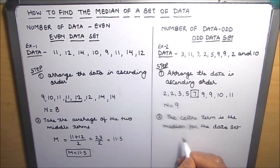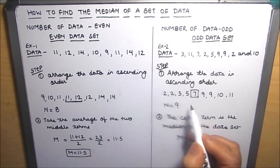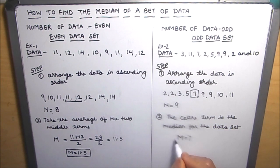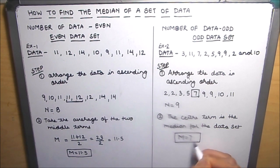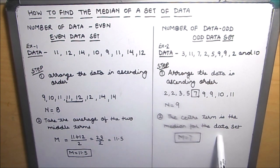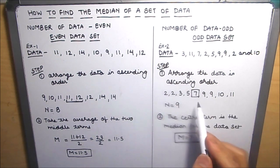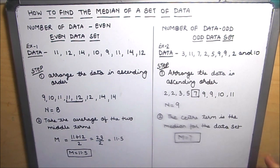Our median is 7 because 7 is the middle number, or the center term, in the data set. This is how you can find the median for a data set where the number of terms is odd — you just need to arrange the data in ascending order and find the center or middle term. I hope this is helpful to you. Thanks for watching.